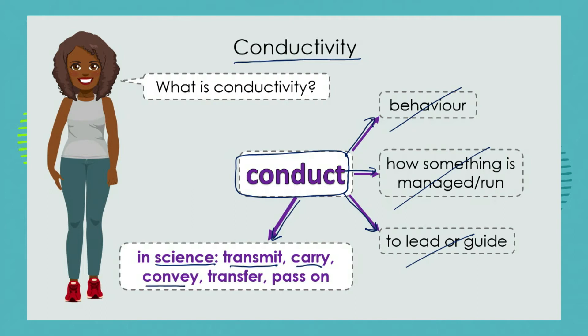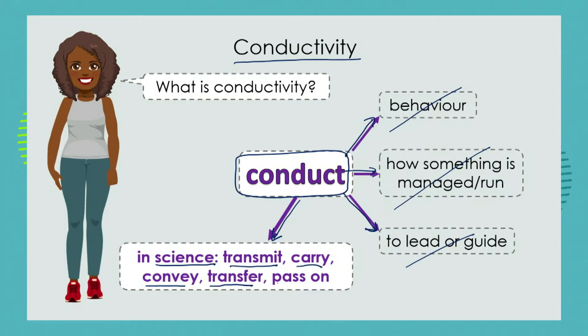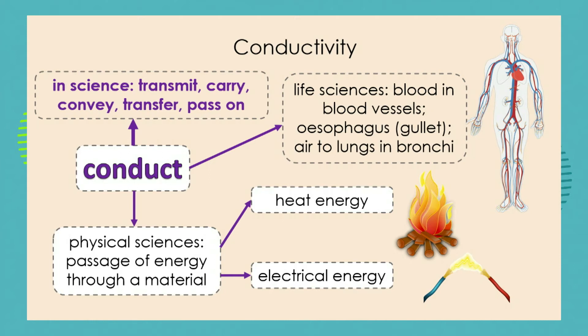You can see that transmit, carry, convey are all synonyms — words that mean a similar thing — along with transfer and pass on. All of these are synonyms for the word 'conduct'. So when we're looking at conductivity from a science perspective, we see that it means transmitting, conveying, passing on, and it comes into many different aspects of science.